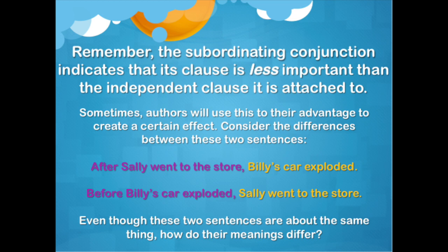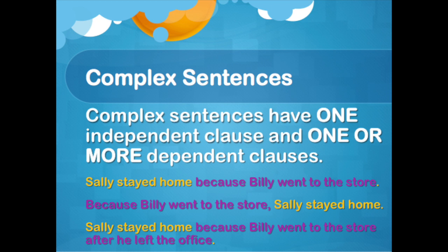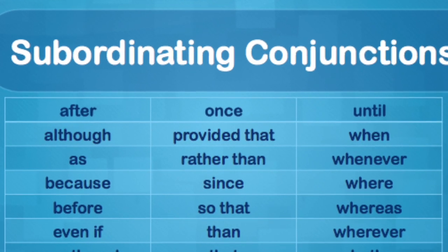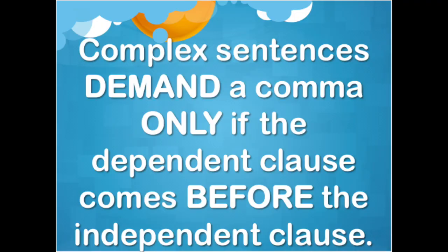Complex sentences take one independent clause and one or more dependent clauses and squish them together. Remember, dependent clauses have a subordinating conjunction, so that means one of the clauses in a complex sentence is more important than the other. The thing to remember with complex sentences is that you can really move these clauses around, and that can be a lot of fun. But if you put a dependent clause before an independent clause, you have to have a comma in between them.